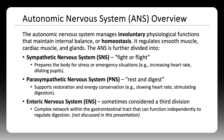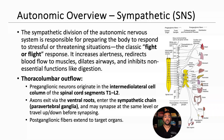Now let's shift to the autonomic nervous system, which manages involuntary functions. It regulates smooth muscle, cardiac muscle, and glands to maintain homeostasis. It has two primary branches: the sympathetic, or fight-or-flight system, and the parasympathetic, or rest-and-digest system. The sympathetic system prepares the body to deal with stress — it increases alertness, dilates airways, raises heart rate, and shifts blood flow to muscles. These pathways originate in the spinal cord between T1 and L2, travel through the sympathetic chain, and extend to target organs.